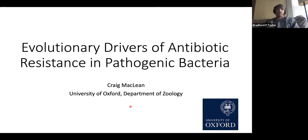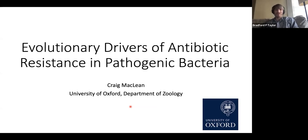Professor McLean has a long-standing interest in understanding how ecological and genetic processes interact to drive adaptation in microbial populations. He obtained his doctorate at McGill University in 2004, where he investigated the causes of metabolic adaptive radiation in Pseudomonas fluorescens using experimental evolution. He then did a postdoc at Imperial College London investigating metabolic cooperation and competition in yeast. In 2007 he moved to Oxford as a lecturer in the Department of Zoology, and later established his research group after obtaining a University Research Fellowship from the Royal Society in 2009. His lab currently focuses on understanding the drivers of antibiotic resistance in clinical settings.